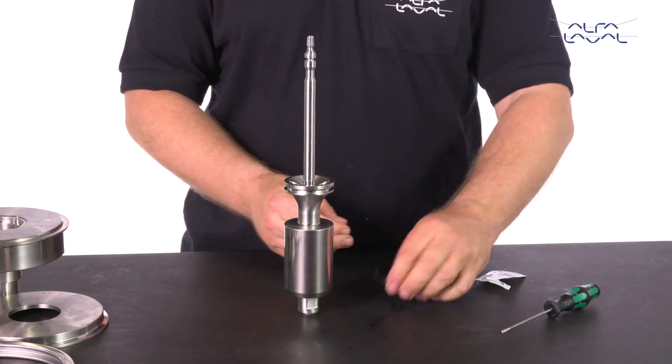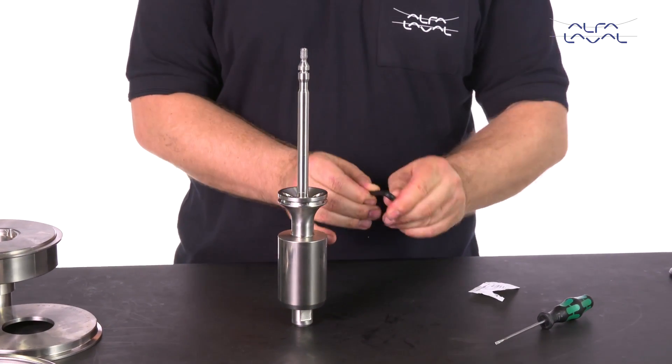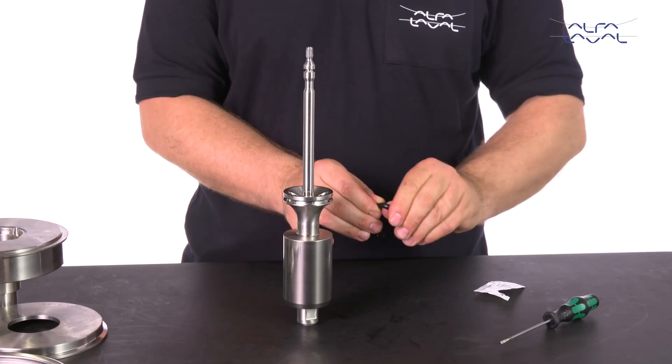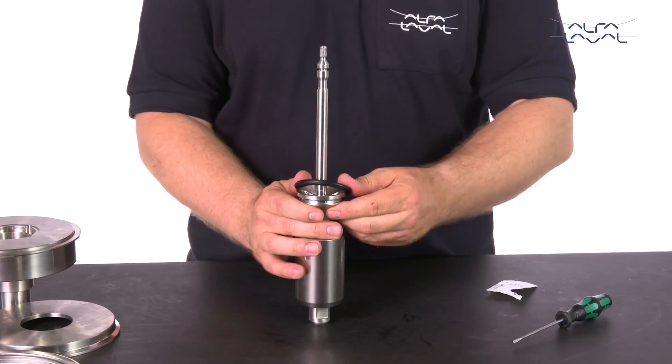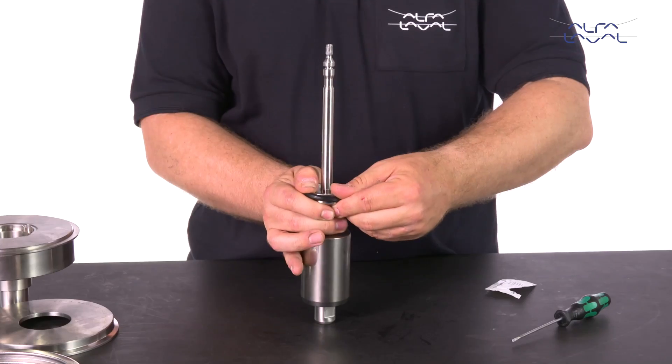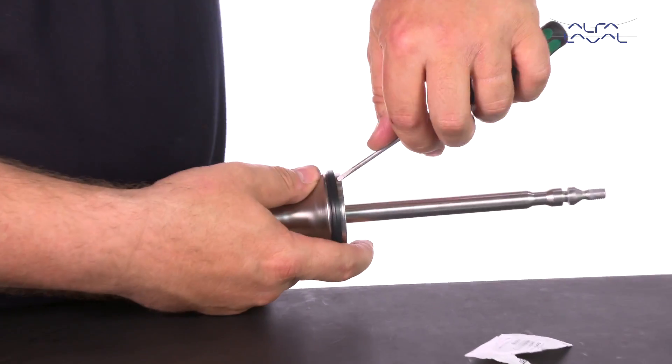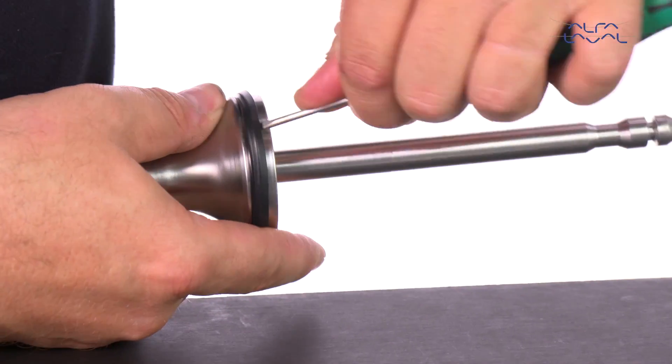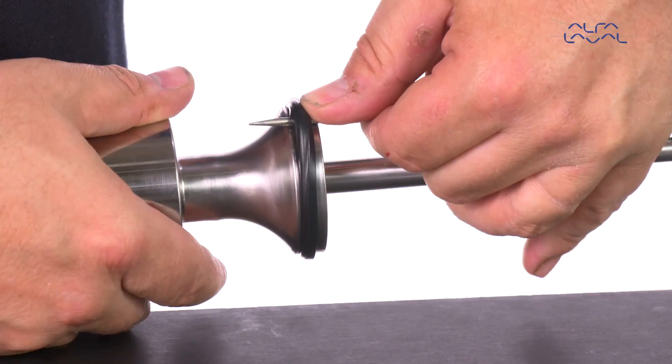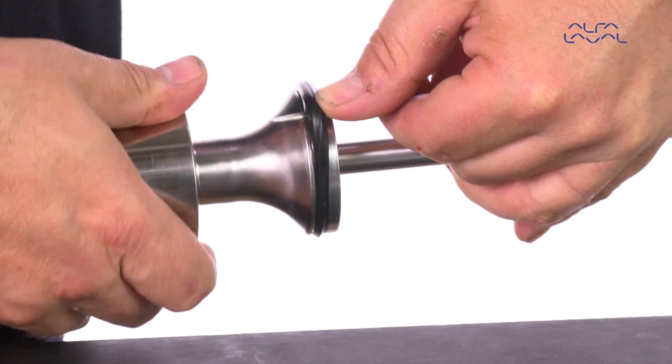Lubricate the replacement radial seal and place the seal in the groove. Using a small screwdriver, gently turn the seal to position it correctly on the plug seal groove. Please refer to the instruction manual for details.